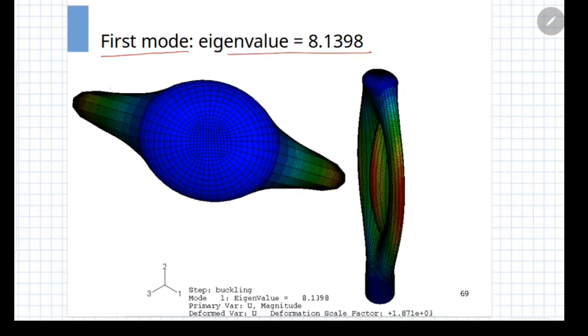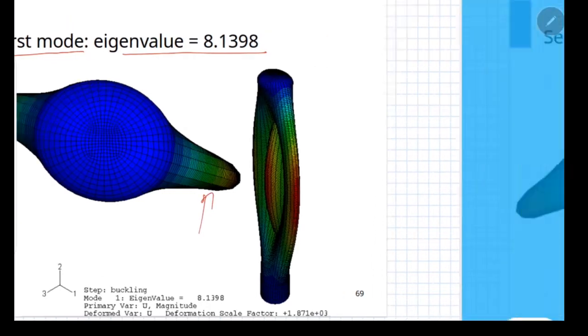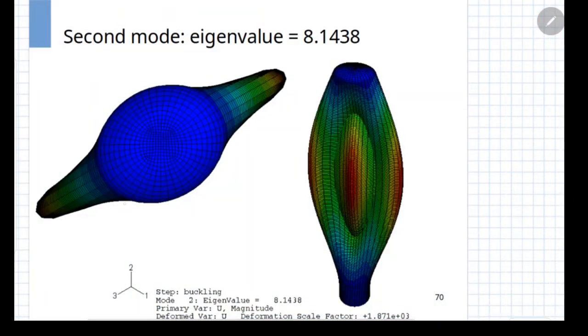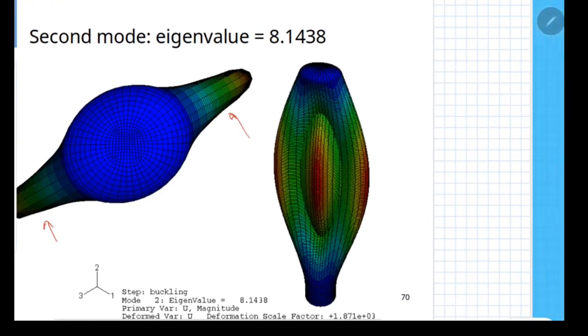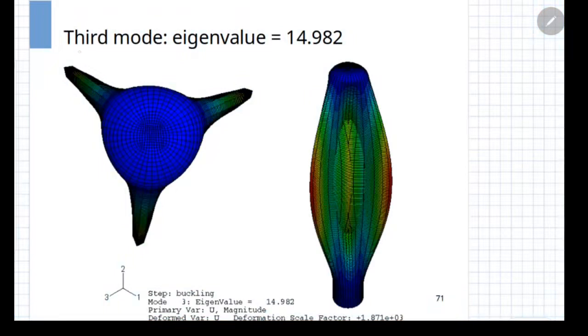The first buckling mode corresponds to formation of two lobes. The second buckling mode is identical to the first mode except that the orientation of the lobes is different and the third mode is having three number of lobes.